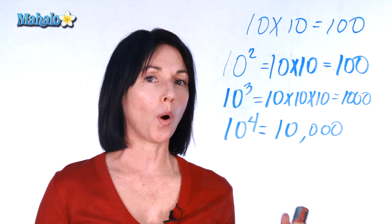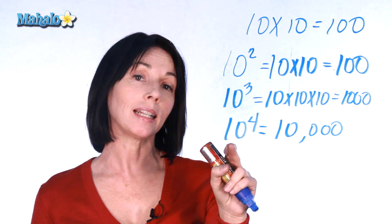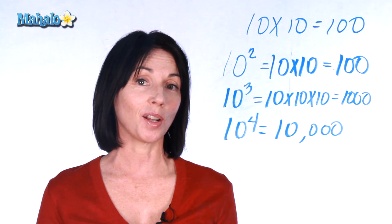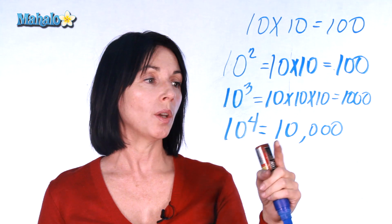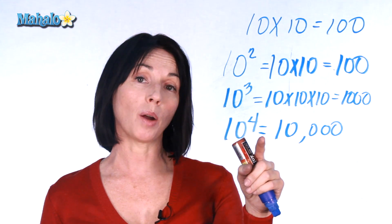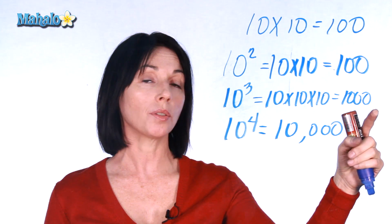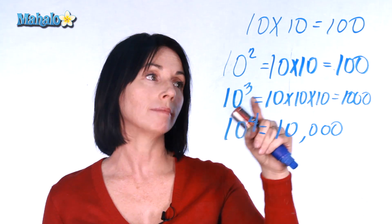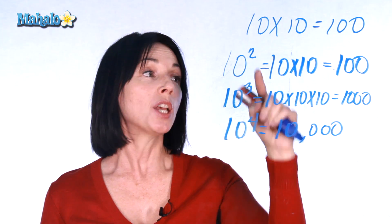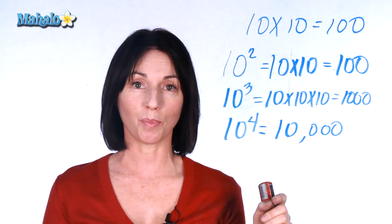There's a pretty straightforward way to go from this number to writing it as 10 with an exponent, and that's just counting the zeros. So if you have a 1 with four zeros, that's equal to 10 to the power of 4. If you have a 1 with three zeros, that's 10 to the power of 3. A 1 with two zeros is 10 to the power of 2. So however many zeros you have, that's what your exponent will be.